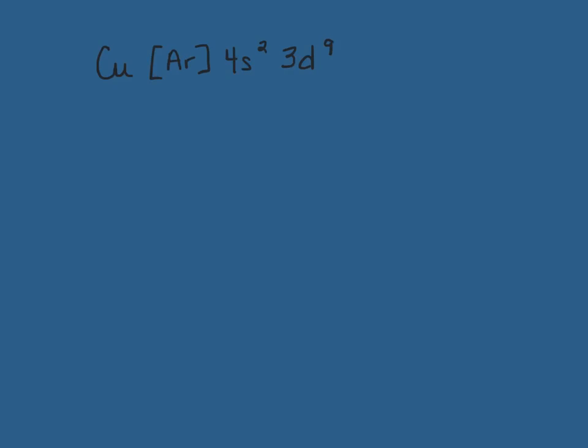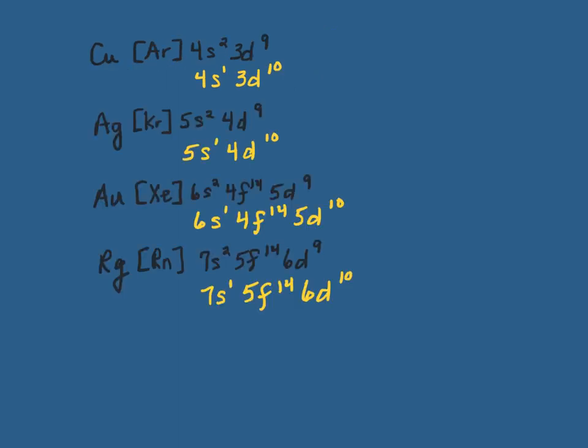The second exception comes with copper and its group, and perhaps you can already see that 4s1 3d10 is going to be better. Instead of full and partially full, which we don't like, half full and full is better. So again, with this group here, you've got instead of 4s2 3d9, 4s1 3d10. 5s2 4d9 is really 5s1 4d10, etc. So those are the exceptions, and that's why they happen.